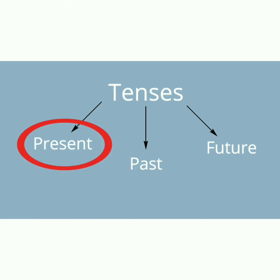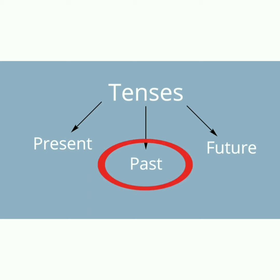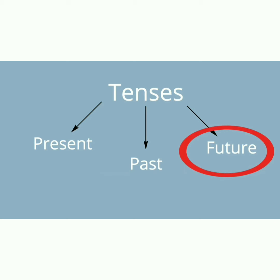We know tense کے تین types ہوتے ہیں: Present, Past, Future. Present میں ہم present کی بات کرتے ہیں — present میں جو چل رہا ہے۔ Second is past — جو کام ہم نے past میں کیا، جو بیت چکا ہے۔ Future — جو کام ہونے والا ہے، جو کام ہم future میں کریں گے۔